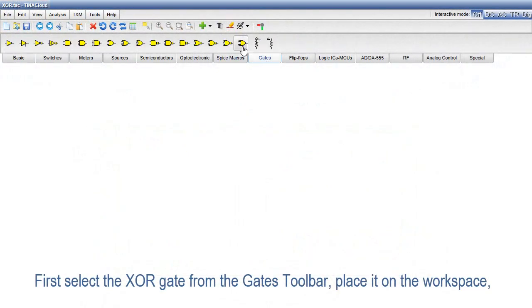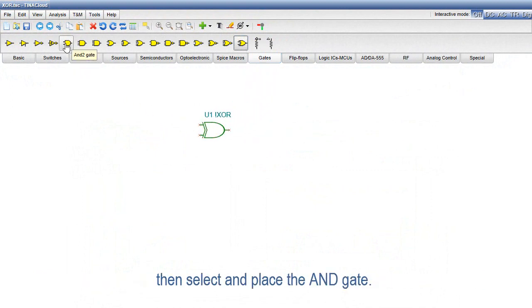First, select the exclusive OR gate from the gates toolbar. Place it on the workspace, then select and place the AND gate.